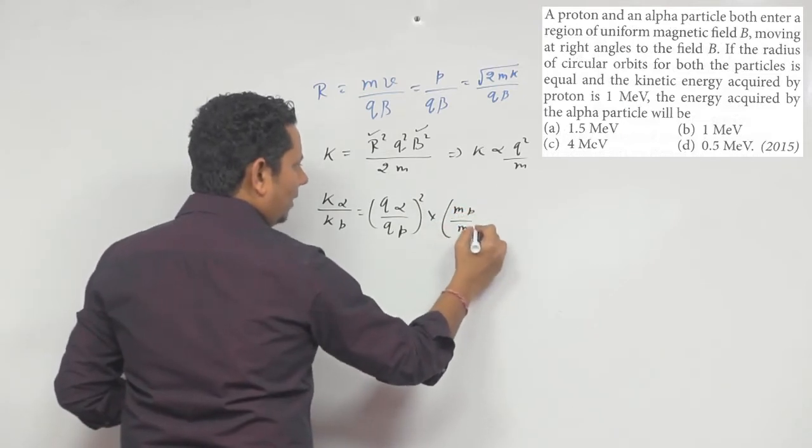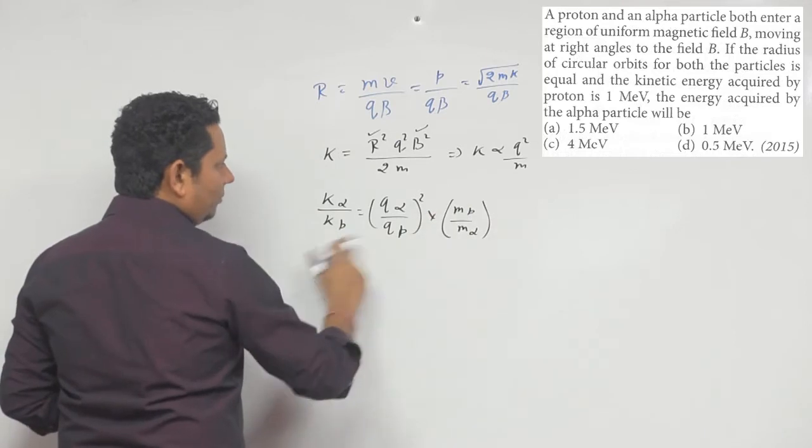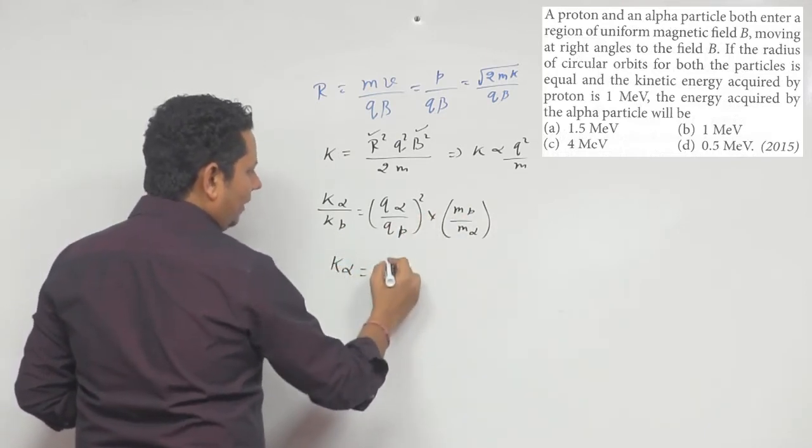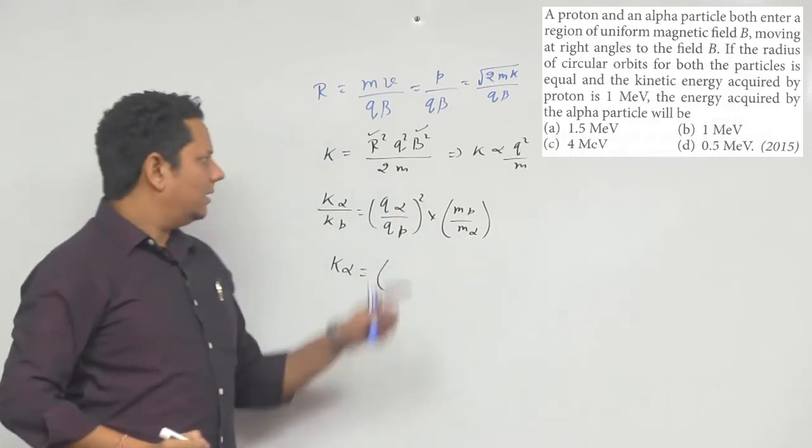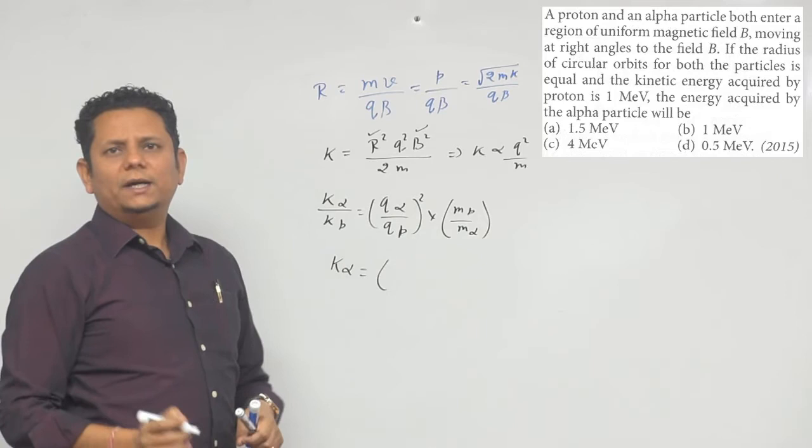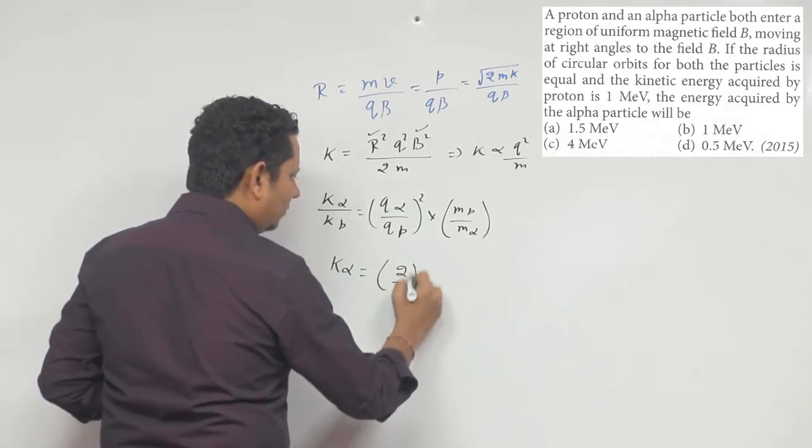of proton / mass of alpha. All right, isko daal dijiye. Kinetic energy of proton aapne ko 1 MeV de rakhe. To kinetic energy of alpha will be: q_alpha / q_proton ka ratio - isko hum 2/1 likh sakte hain, uska square